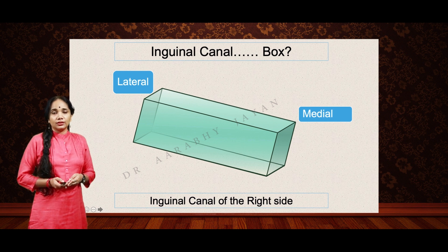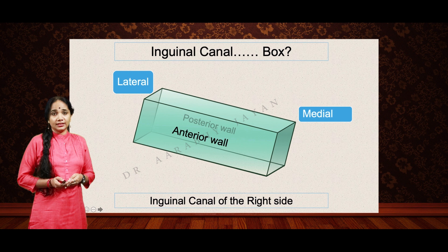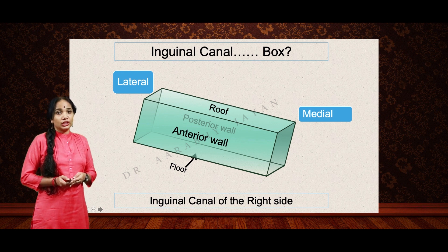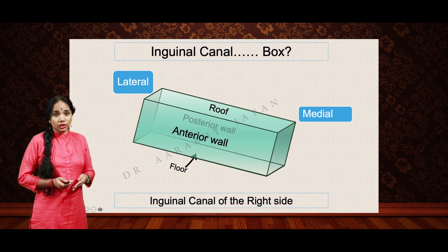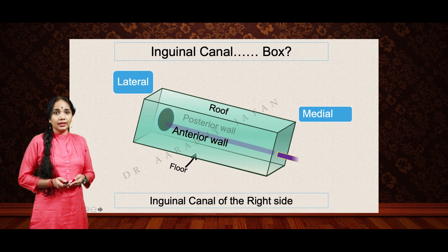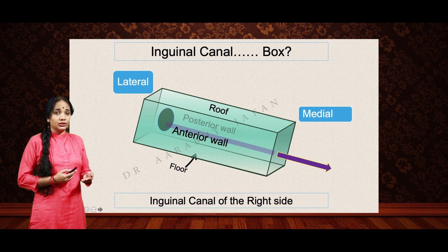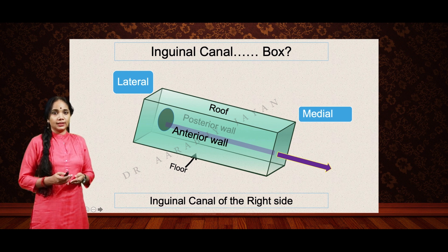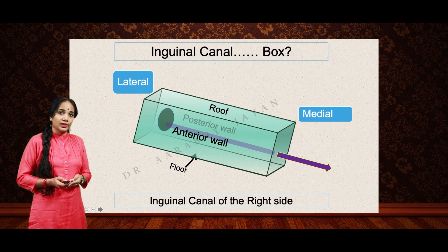For the right inguinal canal, let's label the walls. Here we have the anterior wall and the posterior wall, there is a roof, and this is the floor. We know that the fascia transversalis is the posteriormost structure and a defect there is the deep inguinal ring. Structures passing through the inguinal canal pass within the box and exit via the superficial inguinal ring.